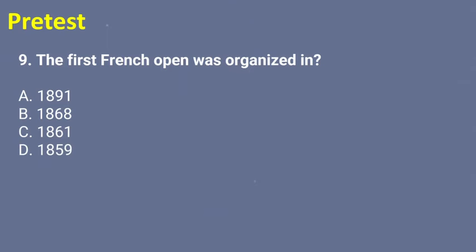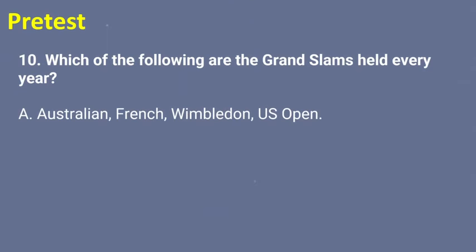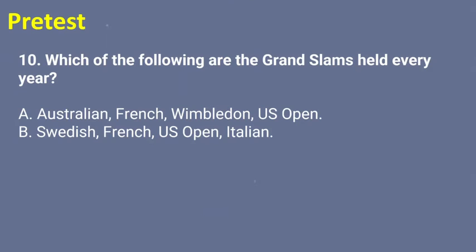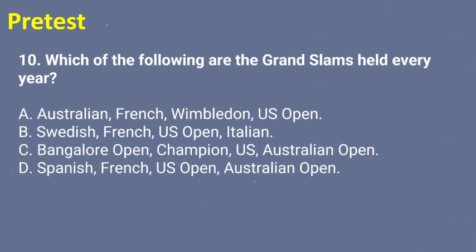Last number, number ten: which of the following are the grand slams held every year? A — Australian, French, Wimbledon, U.S. Open; B — Swedish, French, U.S. Open, or Italian; C — Bangalore Open Champion, U.S., Australian Open; or D — Spanish, French, U.S. Open, Australian Open. The answer for number ten is letter A — Australian, French, Wimbledon, and U.S. Open. Congratulations to those who got the perfect score!